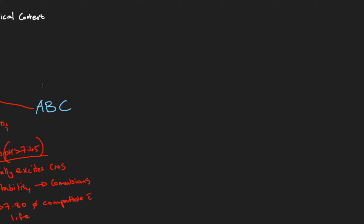Welcome back. In the last video we introduced arterial blood gases and looked at the acid-base component from our systematic approach. That systematic approach needs to be considered with clinical context, and the three parts are: we look at the acid-base status, the basic primary disturbance, and any compensation for that primary disturbance. I introduced the ABC method for interpreting arterial blood gases.